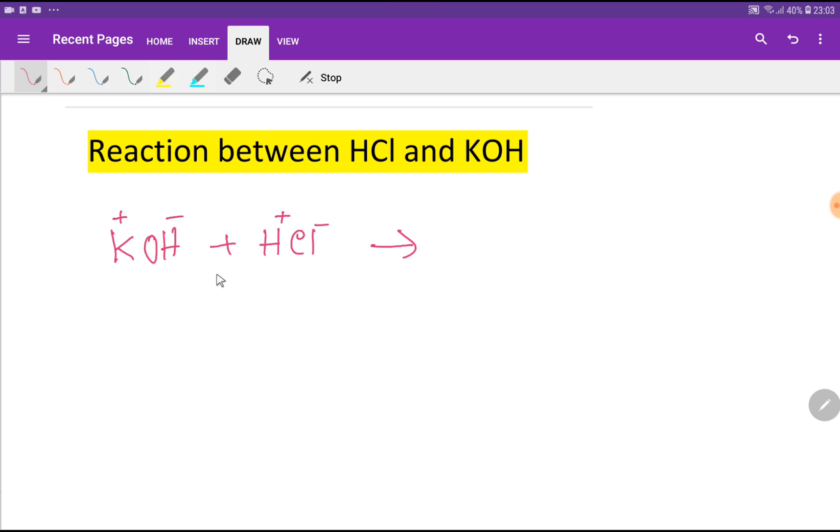Potassium hydroxide is a base because it can produce hydroxide ions in the aqueous solution. On the other hand, hydrochloric acid is an acid because it can produce protons or H+ in the aqueous solution. So what will be the product?